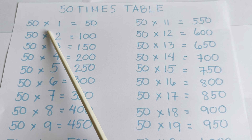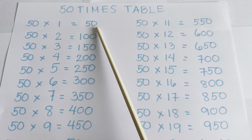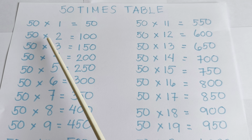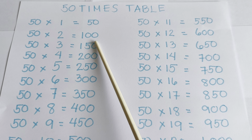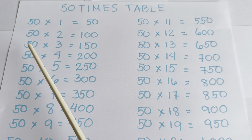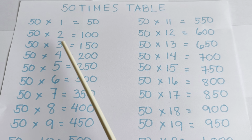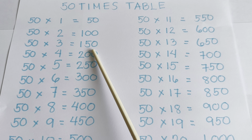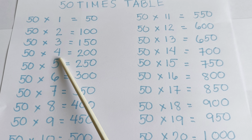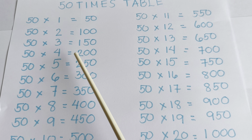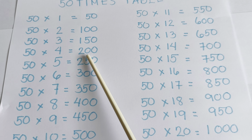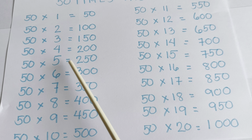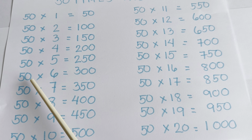50 times 1 is equal to 50. 50 times 2 is equal to 100. 50 times 3 is equal to 150. 50 times 4 is equal to 200. 50 times 5 is equal to 250.